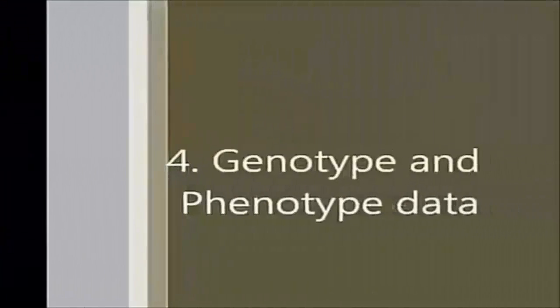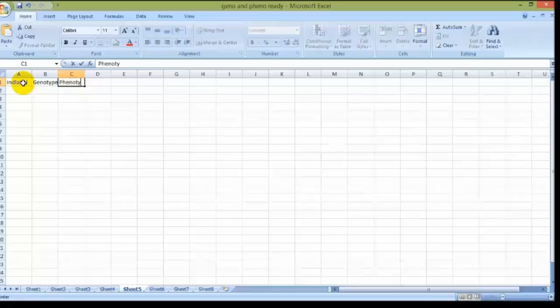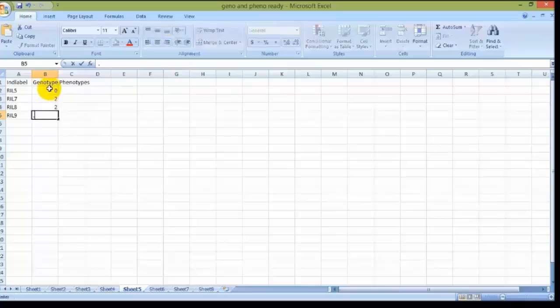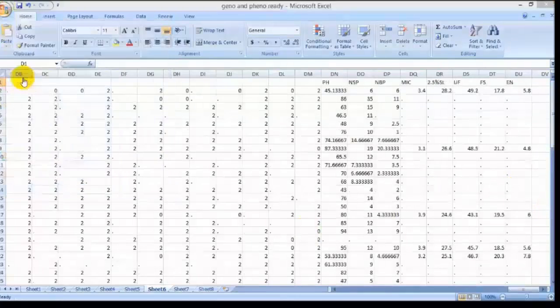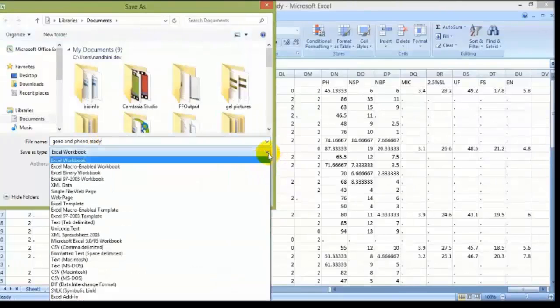Generating genotype and phenotype data is the final step in data file preparation. Open a new Excel sheet. In the first row, headers for individual, genotype, and phenotypes like plant height, number of sympodia, and so on were entered in subsequent columns. The individual, genotype, and phenotype are entered in the same order as mentioned in the header. Here we are using 8 phenotypes: plant height, number of sympodia, number of bolts per plant, uniformity, elongation, micron array, and fiber length. The value 2 corresponds to homozygous parent A, and 0 is for homozygous parent B, and dot is for missing value. This Excel file has to be saved in the name of geno and pheno data with the extension of .txt file format.